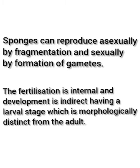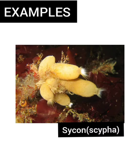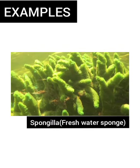The fertilization is internal and the development is indirect, having a larval stage which is morphologically distinct from the adult. The common examples for phylum Porifera are Sycon, Spongilla, and Euspongia.